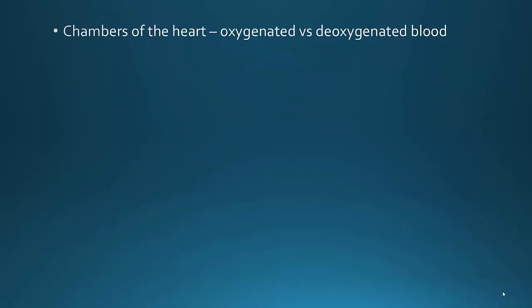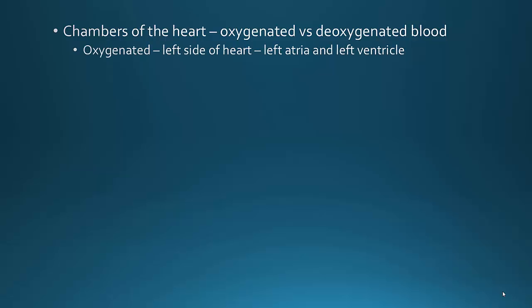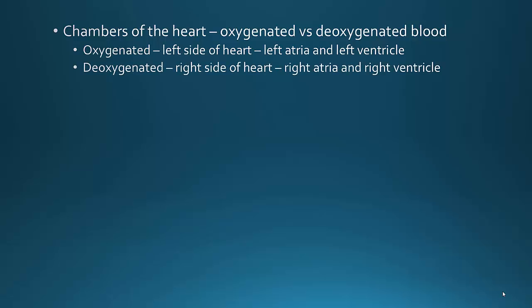On the heart, you need to know the chambers and which ones are oxygenated and deoxygenated when blood enters them. Oxygenated areas of the heart are the left side — the left atrium and the left ventricle — because they're receiving blood back from the lungs where oxygen has been collected. Deoxygenated blood enters the right side of the heart because it's coming back from the body where it's dropped off its oxygen, and then it goes to the lungs.